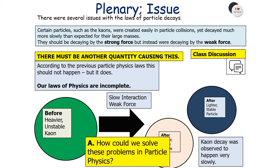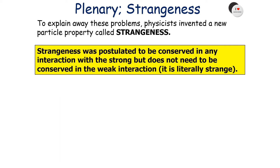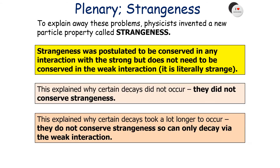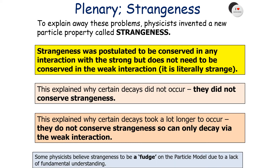To explain these problems, physicists invented a new particle property called strangeness. Strangeness was postulated to be conserved in any interaction via the strong force, but does not need to be conserved in the weak interaction. This explained why certain decays did not occur — they did not conserve strangeness. It also explained why certain decays, such as kaon decay, took much longer to occur, because as they don't conserve strangeness, they can only decay via the weak interaction.